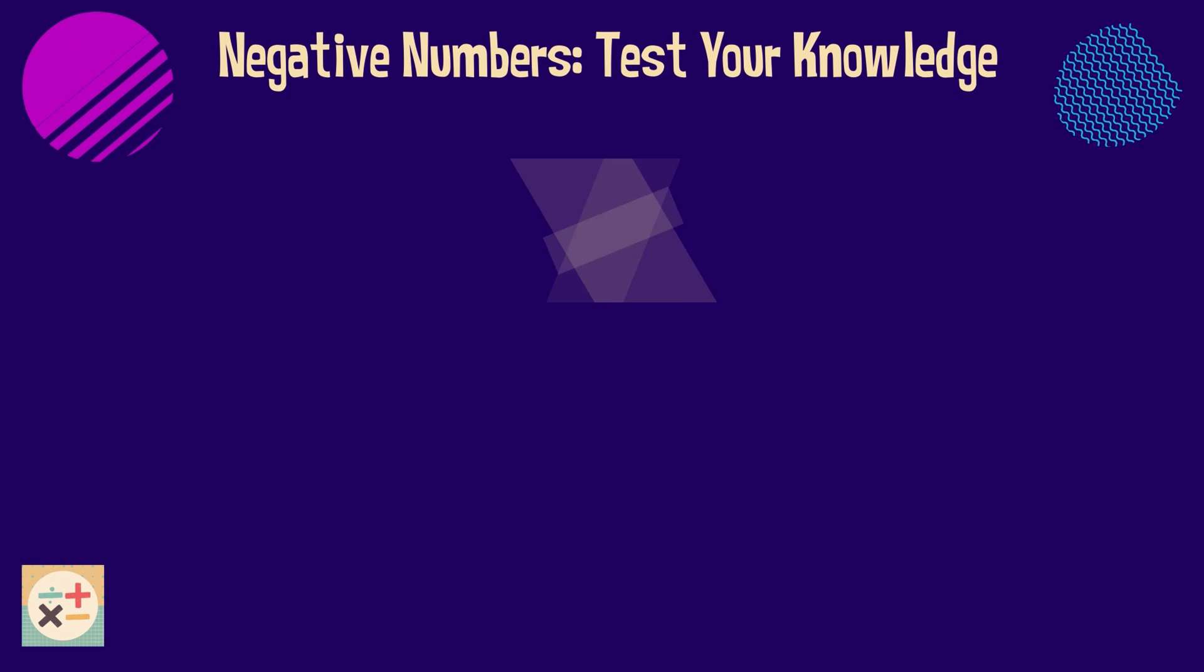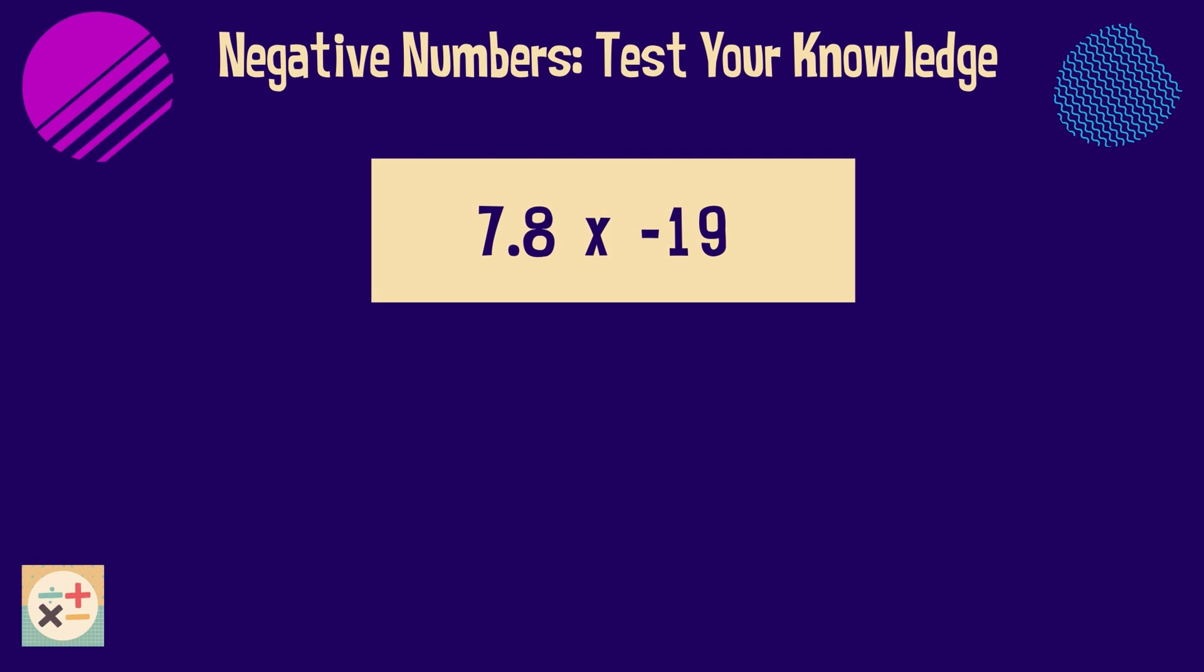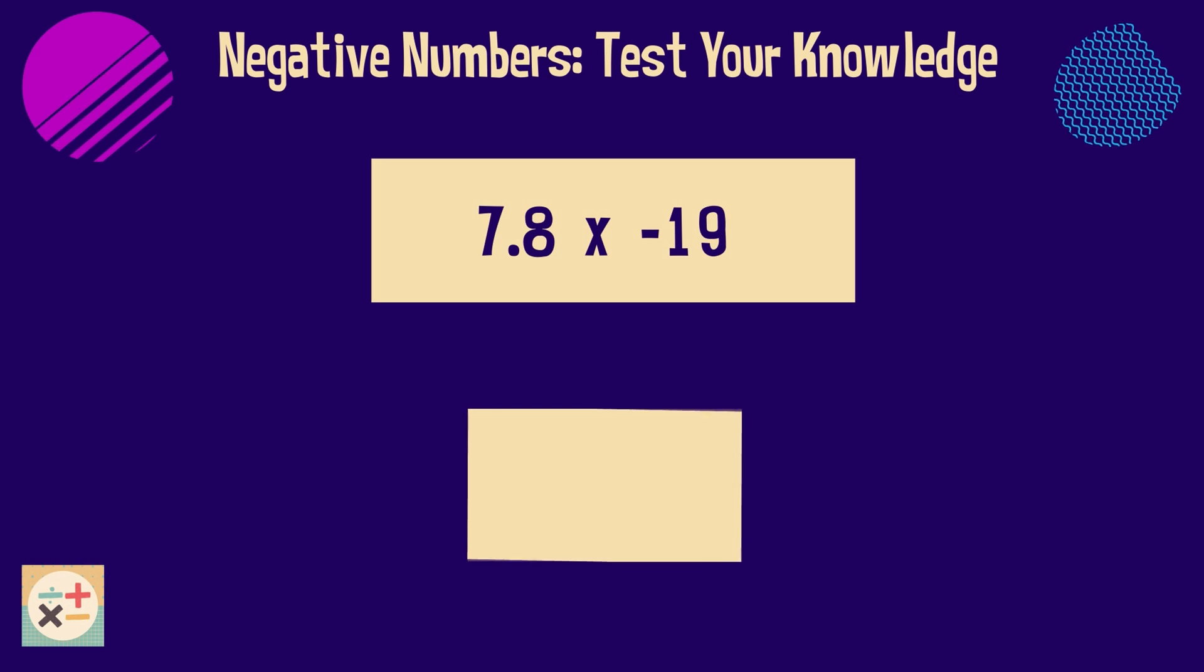Question 9. Calculate 7.8 multiplied by minus 19. The answer is minus 148.2.